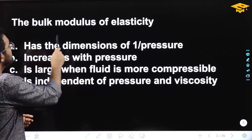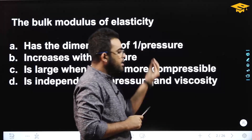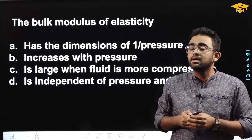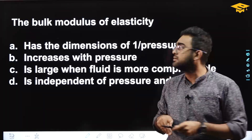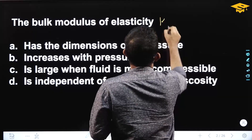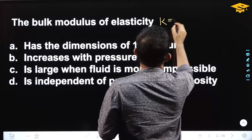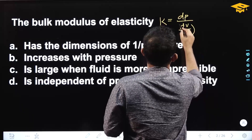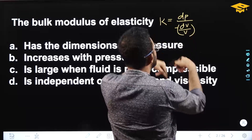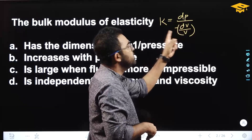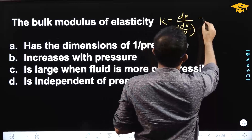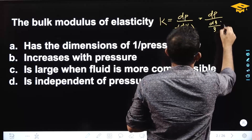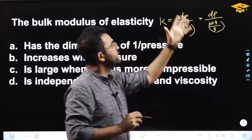The bulk modulus of elasticity is defined by K = -dp divided by (dV/V), with a negative sign. We can also replace dV/V with dρ/ρ, so K = dp divided by (dρ/ρ). This is the bulk modulus of elasticity definition.